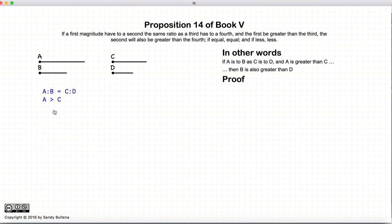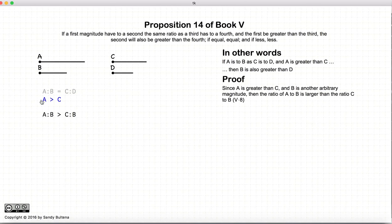So for this proof, we're going to start with a greater than c. Now if a is greater than c, a to b is greater than c to b, where b is our common magnitude, a is greater than c.